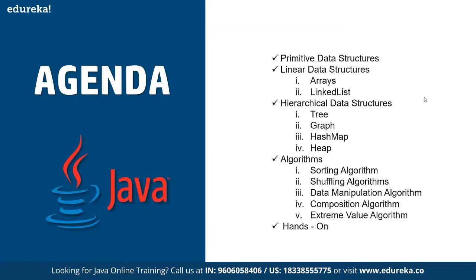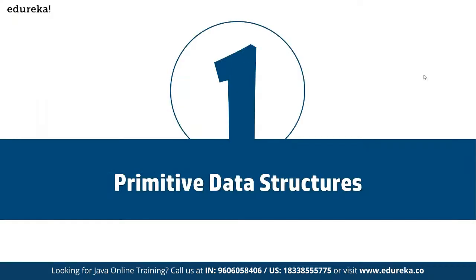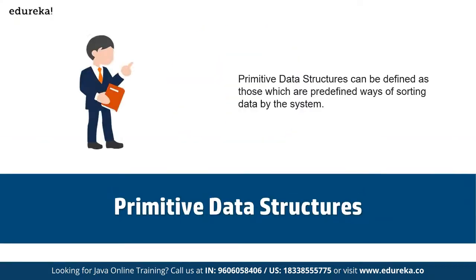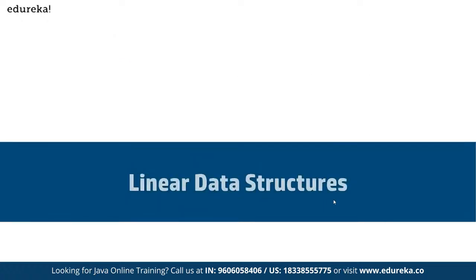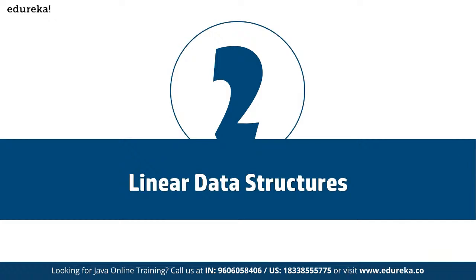We are going to discuss primitive data structures, linear data structures, hierarchical data structures, and algorithms, and then we are going to see a small hands-on on top of it. Primitive data structures are those which are predefined ways of storing data defined by the system — that is what we refer to as primitive data structures in Java.